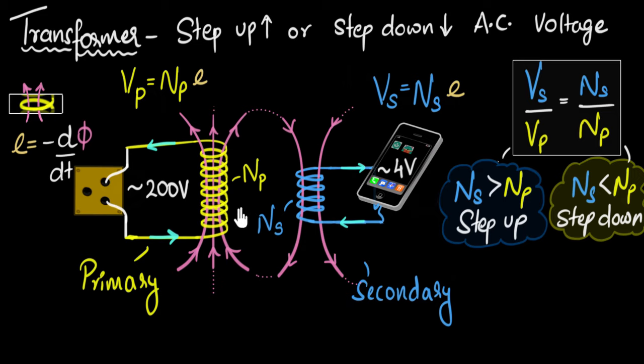All right, hopefully you've tried. So, does it work on DC? Well, let's see. The main principle is electromagnetic induction. And for induction to happen, the flux needs to keep changing. And that can only happen if the current keeps changing. And that does not happen in DC. And that's why you cannot use transformers for DC. You can only use it for AC.